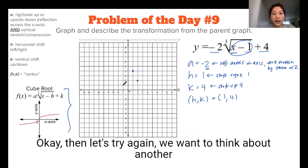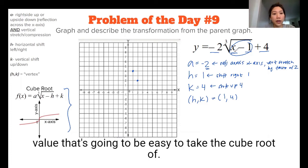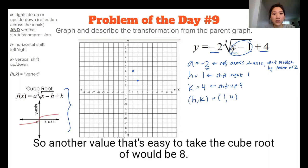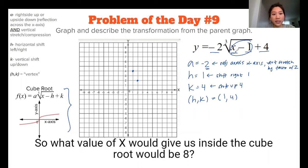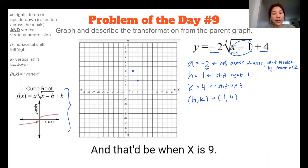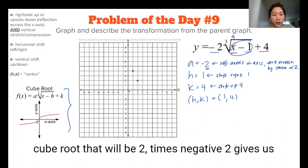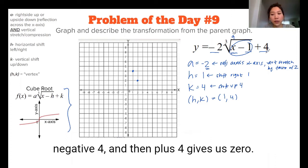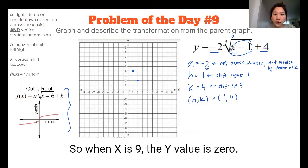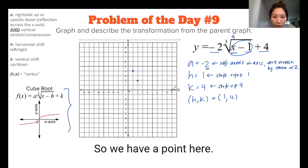Then let's try, again, we want to think about another value that's going to be easy to take the cube root of. So another value that's easy to take the cube root of would be 8. So what value of x would give us inside the cube root would be 8, and that'd be when x is 9. So when x is 9, then when we subtract 1, that'll be 8. Cube root, that will be 2, times negative 2 gives us negative 4, and then plus 4 gives us 0. So when x is 9, the y value is 0. So we have a point here.